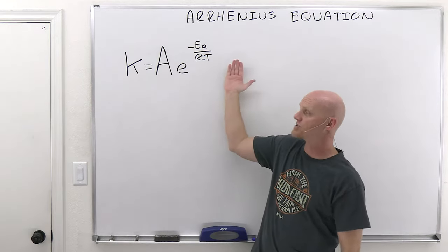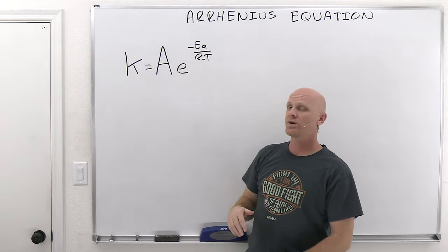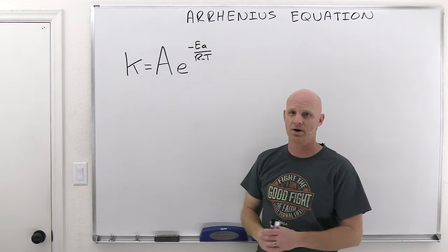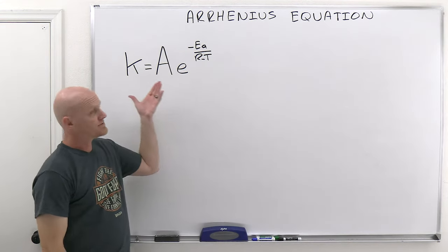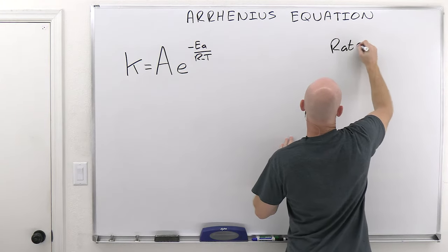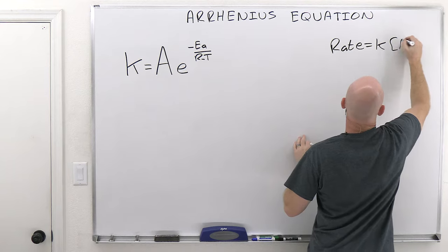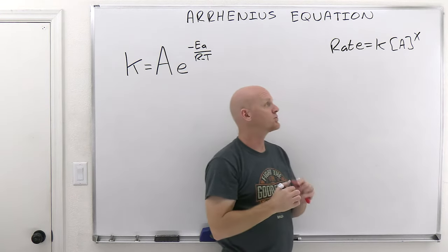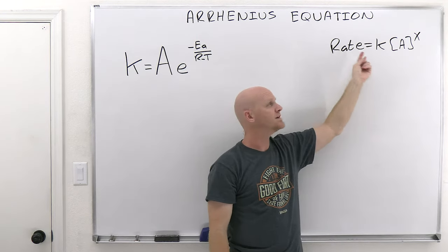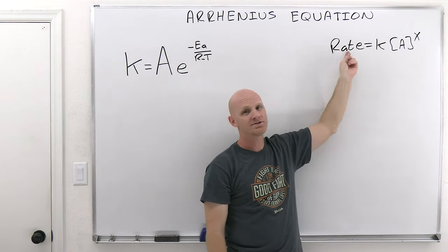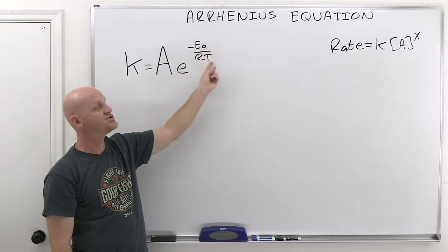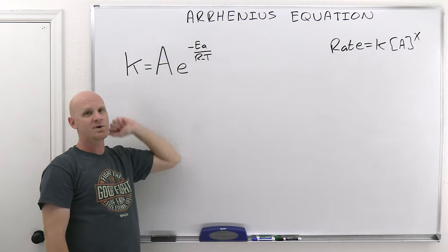Now we're going to look at the Arrhenius equation, which relates the rate constant to the activation energy and the temperature at which a reaction is carried out. This is the same rate constant that appeared in a typical rate law, and the rate is directly proportional to the value of the rate constant — a higher rate constant leads to a faster rate, and a smaller rate constant leads to a slower rate.